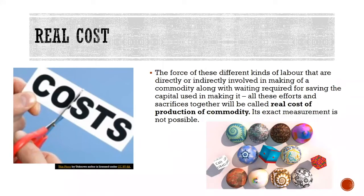Real cost also involves impact on the environment. If we are cutting down trees to produce a piece of furniture, it also has a cost towards the environment. When all these things are taken into account — the environmental impact, the physical things we are using in producing the product, and resources because we have a limited number and we are using them for one particular commodity and not for all others — all these various things, when we see it in a real picture, become the real cost.